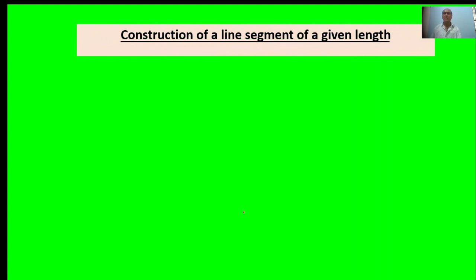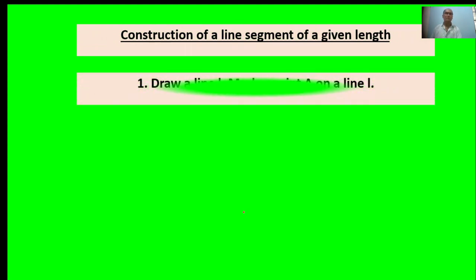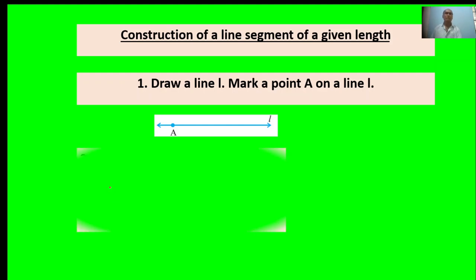Construct a line segment of a given length. First point: Draw a line L. Mark a point A on your line. Draw a line, point A, mark is given.